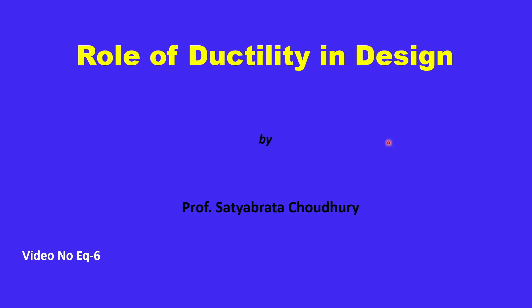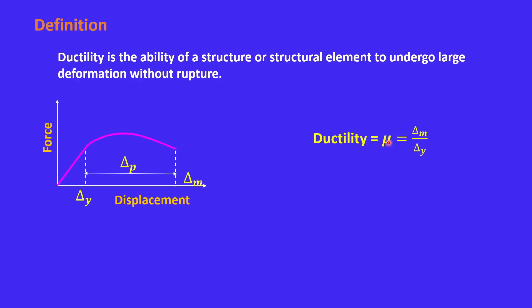Welcome to this video on the role of ductility in design. Ductility is the ability of a structure or structural element to undergo large deformation without rupture. If a structure is able to undergo large deformation, it will not fail within that deformation, and that is why the system will be safe even with large displacement or deformation.